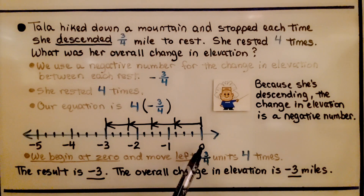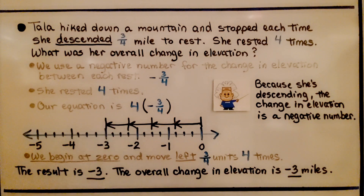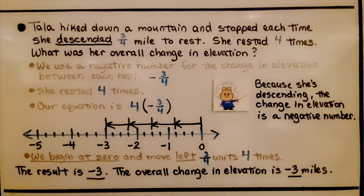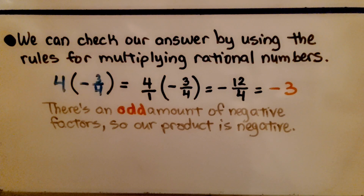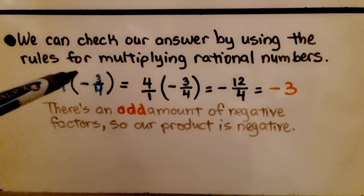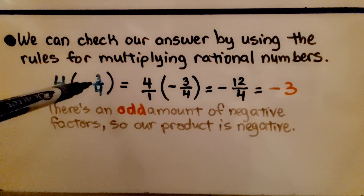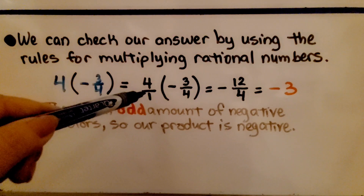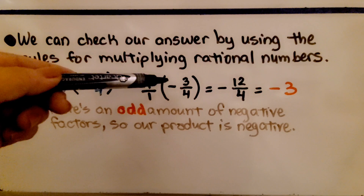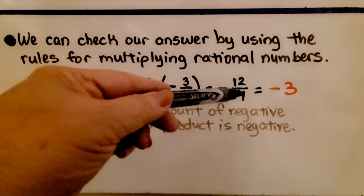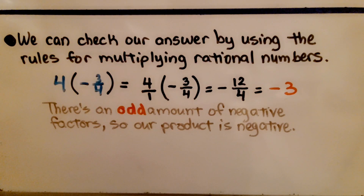We have a number line. We begin at zero, and because she's coming down the mountain we're going into the negatives — we move left three-fourths unit four times. The result is negative three. The overall change in elevation is negative three miles. This is not a distance; distances are always positive. This is a change in elevation in miles. We can check our answer: we have a positive and a negative, so the product is negative. We write four as four over one, multiply straight across: four times negative three is negative twelve, and one times four is four. We have negative twelve-fourths, which simplifies to negative three.